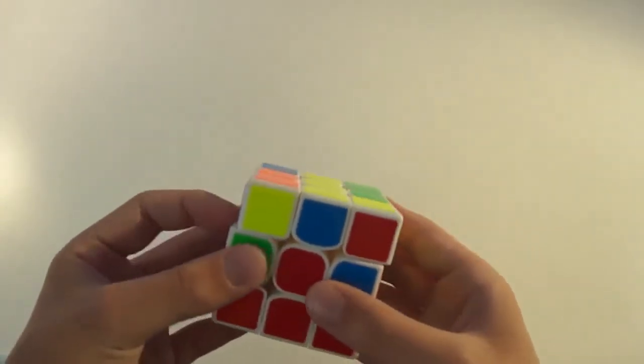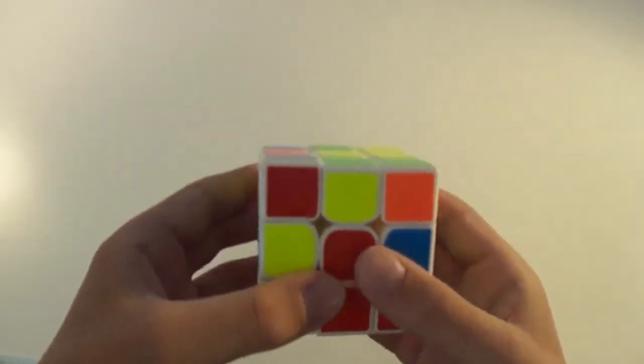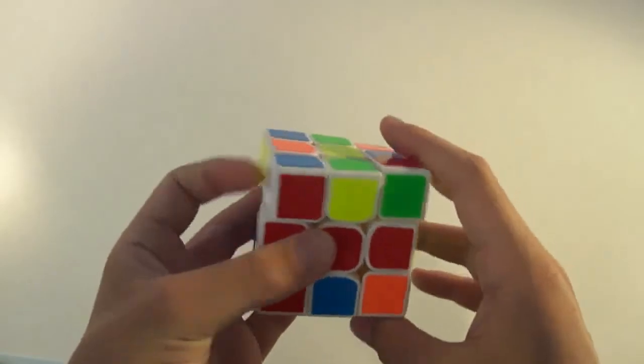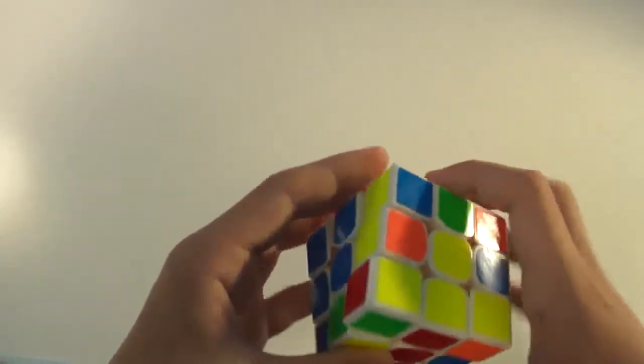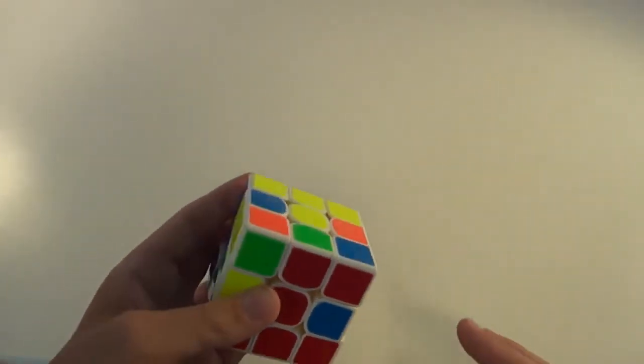which is U prime, L prime, U, L, U, F, U prime, F prime. So, now, it's taken the edge out. Now, you match the front color up with the center, and just insert it in the other spot, like normal.